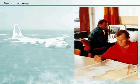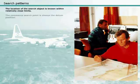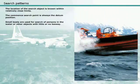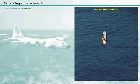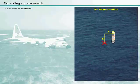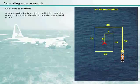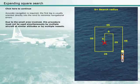The expanding square search is normally selected when the location of the search object is known within relatively close limits. The commence search point is always the datum position. Small boats are used for search of persons in the water or other objects with little or no leeway. Accurate navigation is required, and the first leg is usually oriented directly into the wind to minimise navigational errors. Due to the small area involved, this procedure must not be used simultaneously by multiple aircraft at similar altitudes or by multiple vessels.